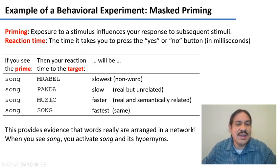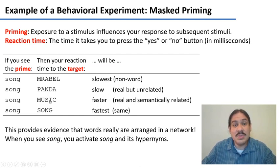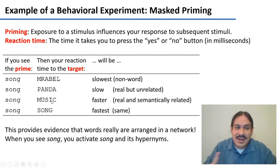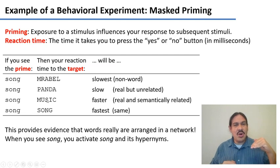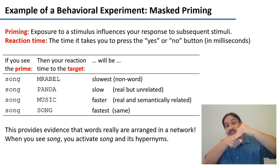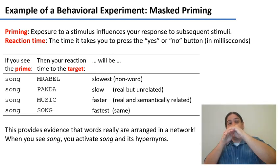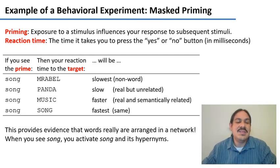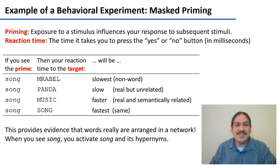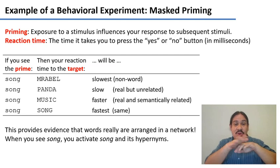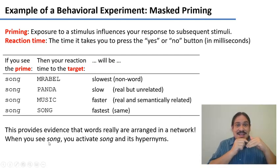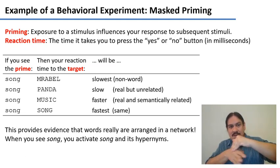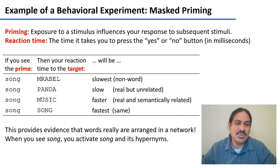The most interesting case is the combination of 'song' and 'music.' This is somewhere in between — not as rapid as song-song because it's a different word, but faster than song-panda. Why? Because 'song' and 'music' are semantically related. When you open the file for 'song,' it also opens files for semantically connected words, including 'music.' So 'music' gets a little boost when it appears as the target. This provides mathematical, tangible reality for concepts like the mental lexicon and the idea that words are connected — seeing 'song' activates 'song' and its hypernyms like 'music.'